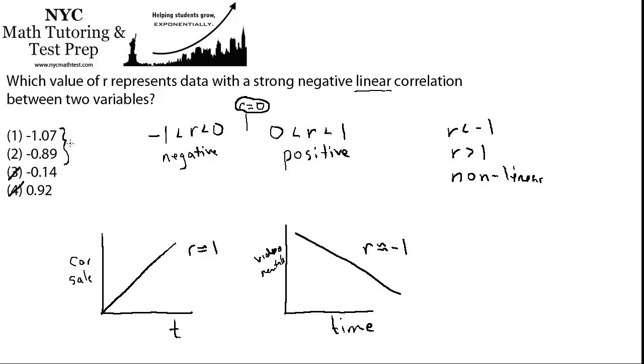The temptation is to choose one because it's closer to negative one. It's only seven hundredths away from negative one, and 0.89 is eleven hundredths away from negative one, but really the answer is two.